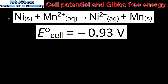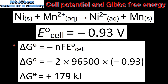Let's have a look at one more example. In the previous video we calculated the cell potential for this reaction and we got a value of negative 0.93 volts. Once again we will calculate the change in Gibbs free energy using this equation. We have two moles of electrons transferred in the reaction, multiply by the Faraday constant, and then multiply by the negative value for the cell potential.